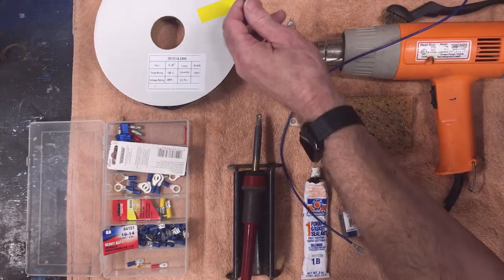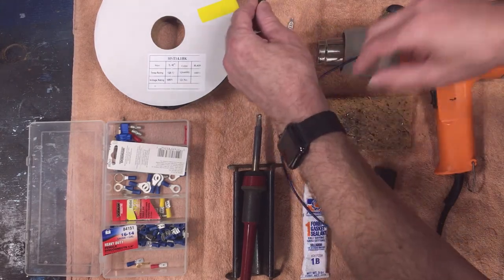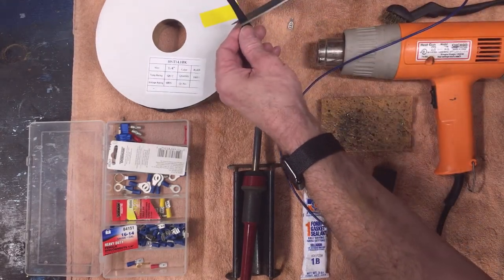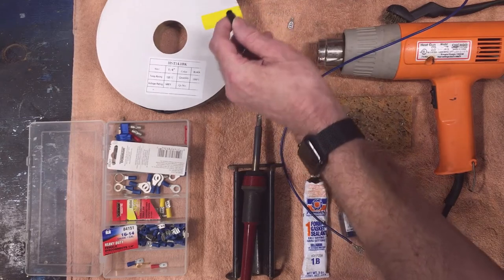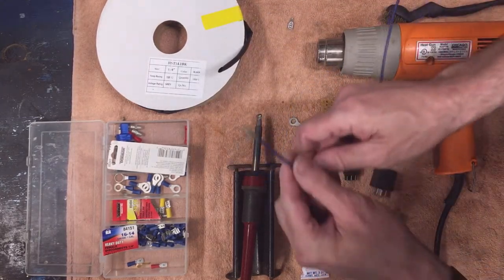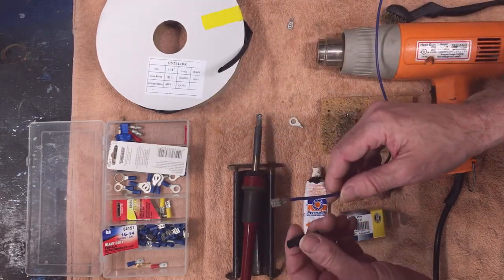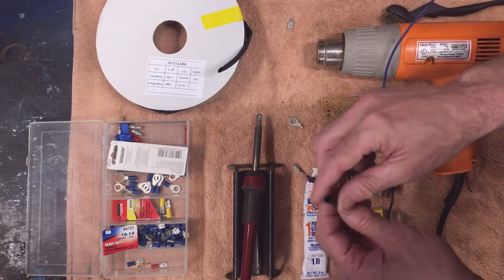So once I've got it soldered, on this type of a connector it's not really important to make sure it's sealed because it's going to be open on this end, but I like to use heat shrink tubing on it to make sure that this connector is insulated.